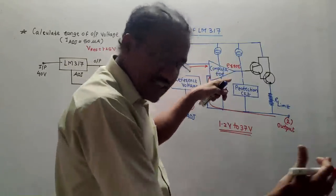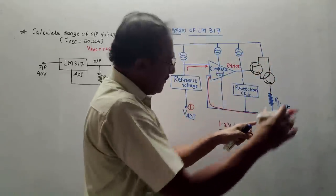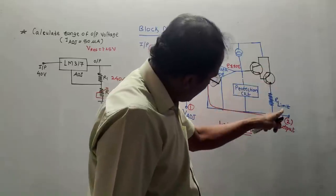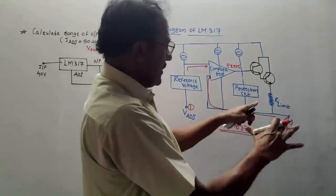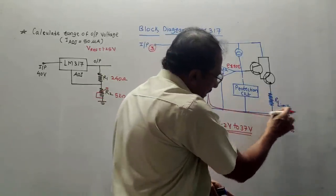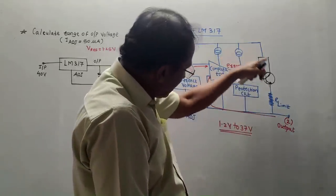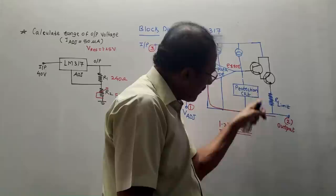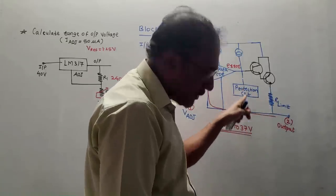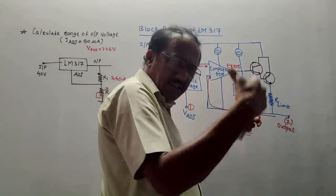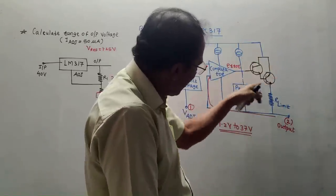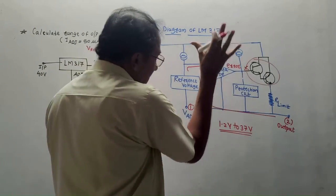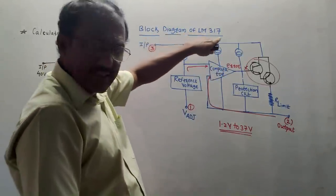This error signal decides whether to switch on or switch off the Darlington pair. There is also a limiting resistor in the diagram, directly proportional to the current passing through the load. So depending on the load current, the voltage across this resistor changes and accordingly the Darlington pair is switched on and off. This decision is taken by the protection circuit. If IL increases beyond a certain limit, the protection circuit signals the Darlington pair to switch off, protecting IC LM317.